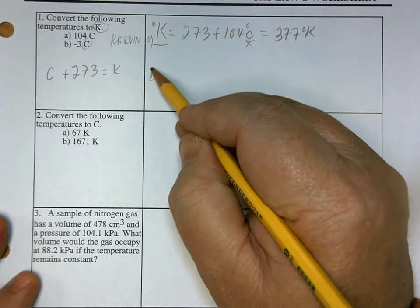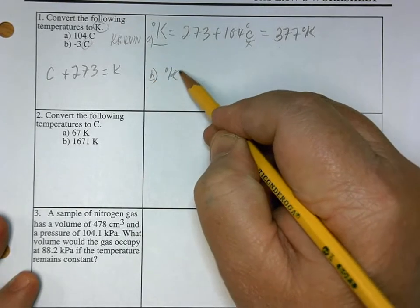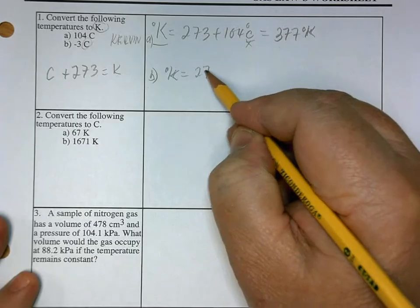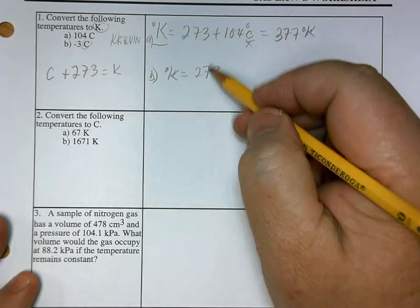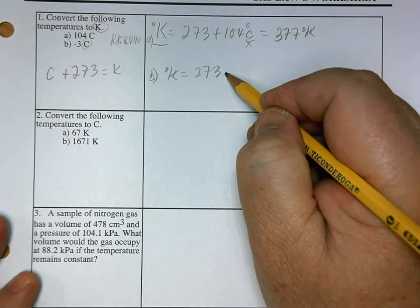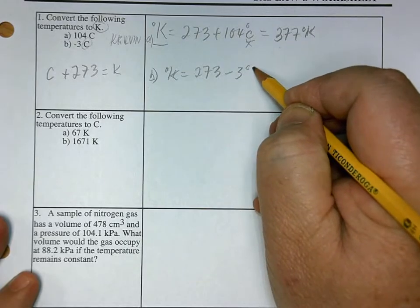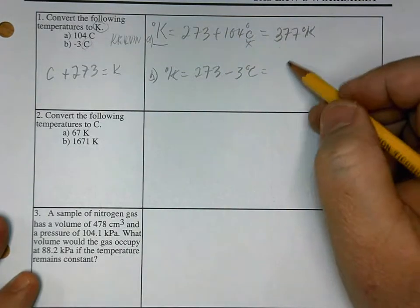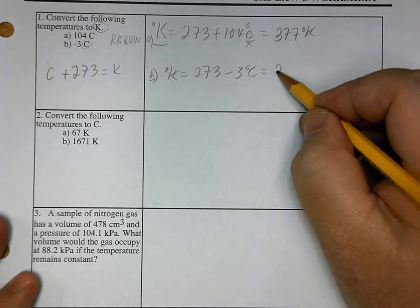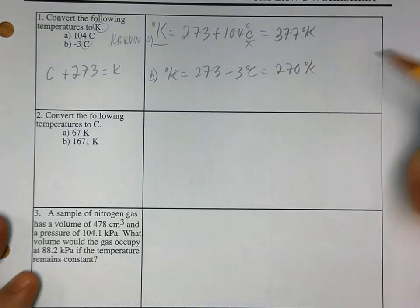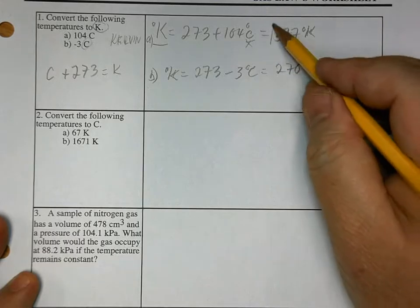What's B? Degrees Kelvin is 273. Now the reason you put this one first is so that if it's minus, you won't be confused. It's 270 degrees Kelvin. And that's all it is.